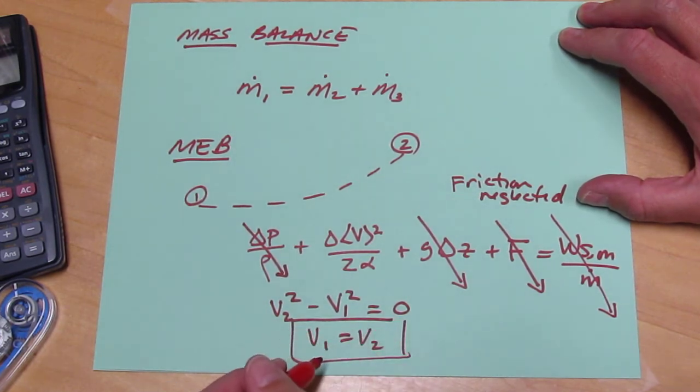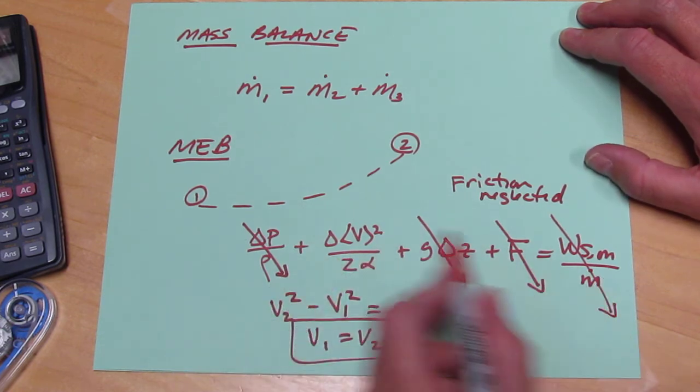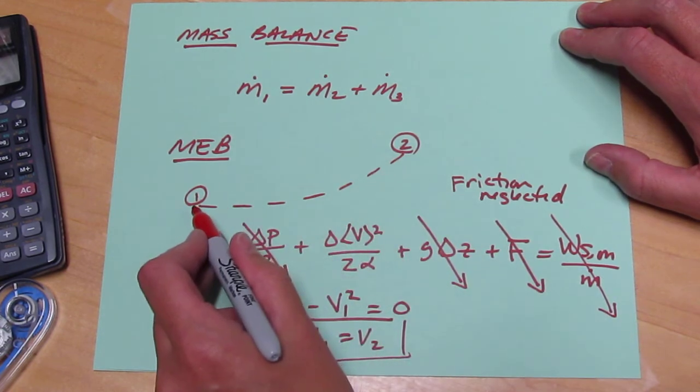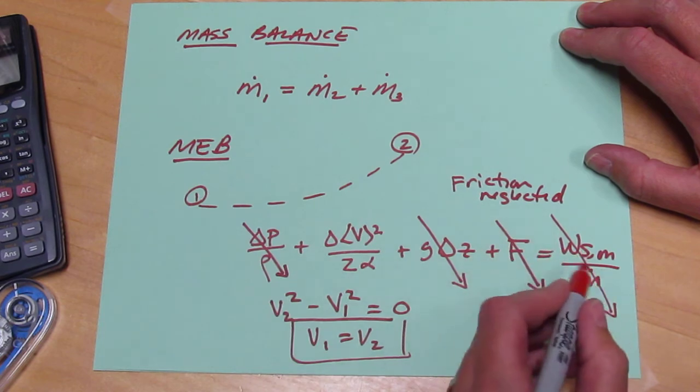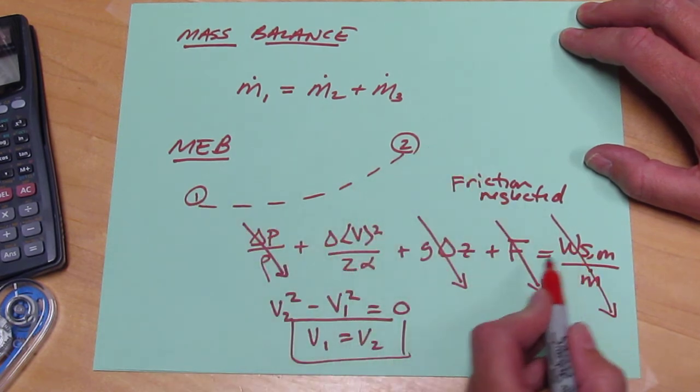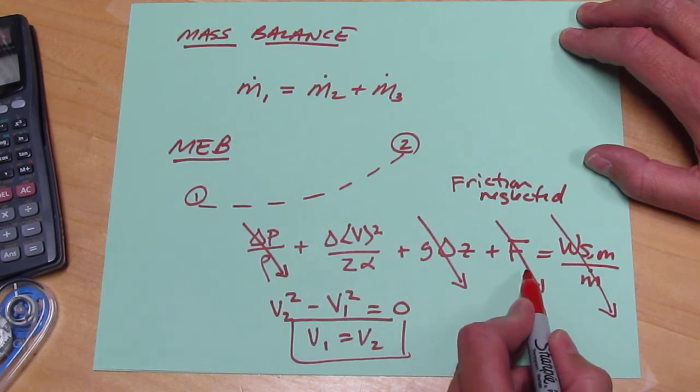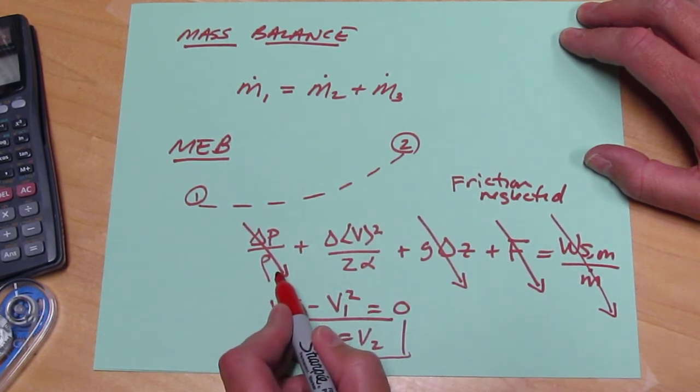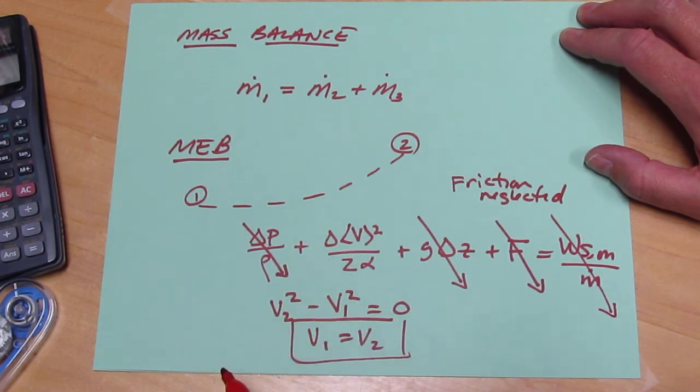It's kind of an interesting result and we can look back and see how we got it. We wrote the mechanical energy balance on a streamline that went from the inlet to one particular outlet. There's no shaft work, there's no friction, gravity's neglected, pressure in a free stream is constant, and so we find that the velocity must be constant.